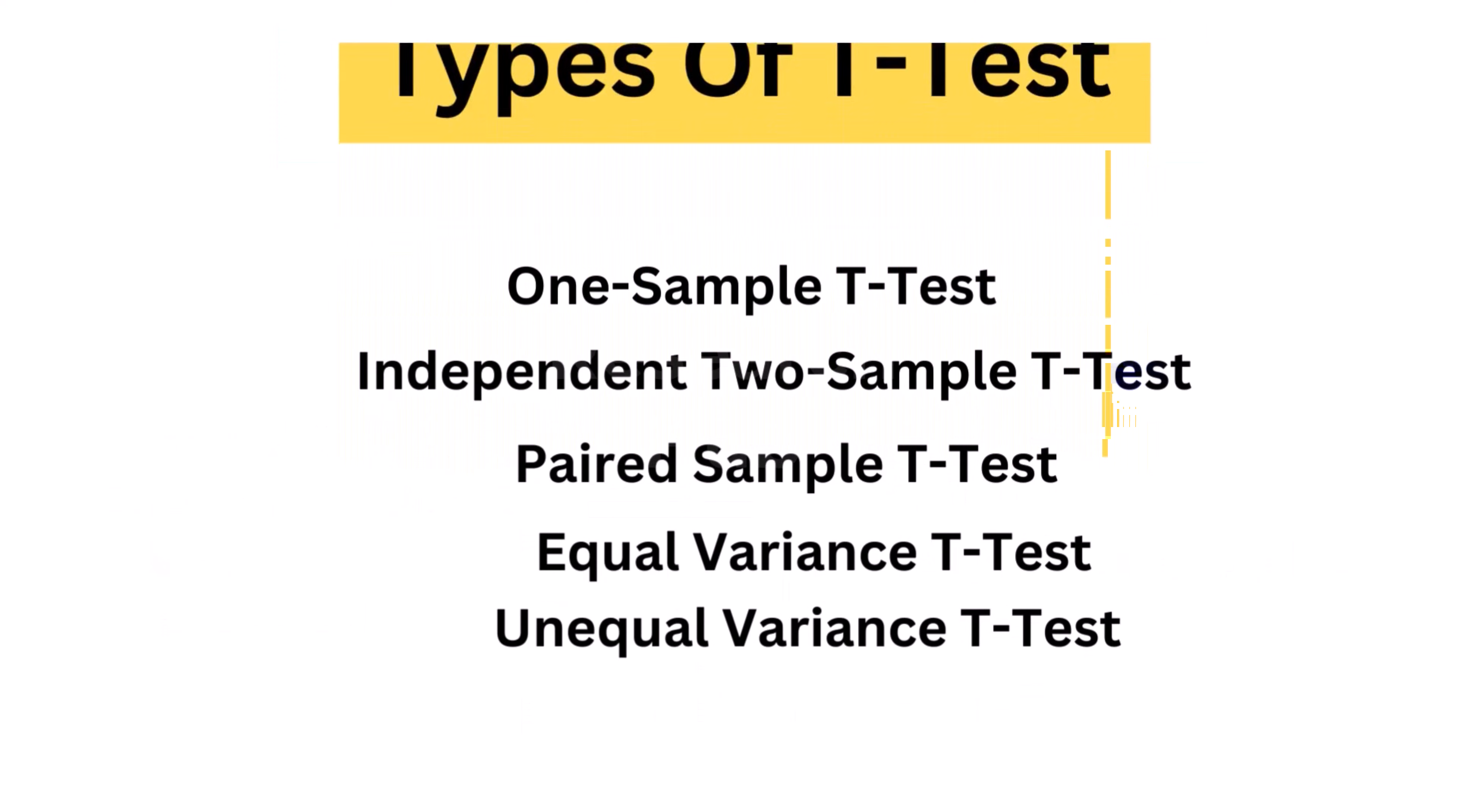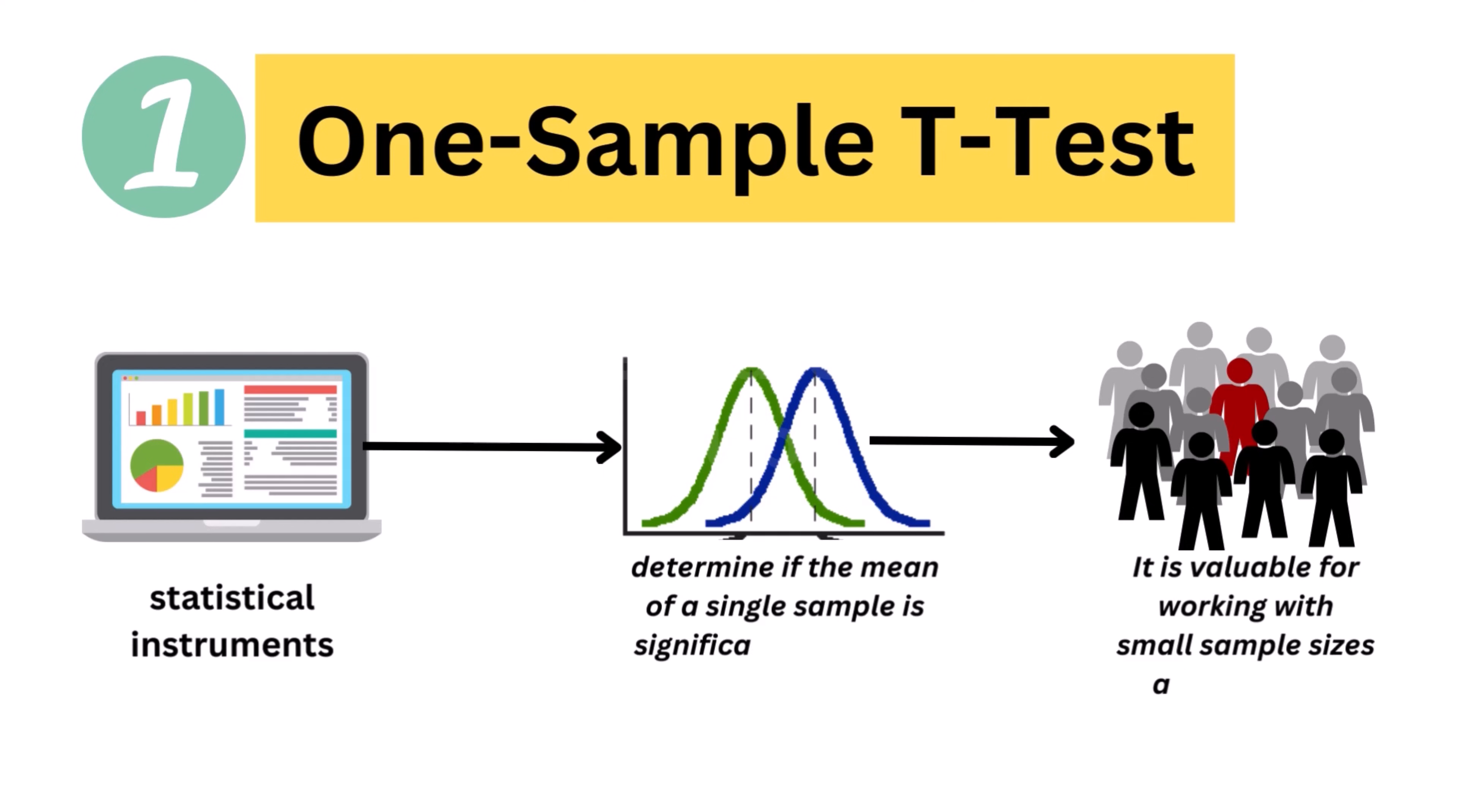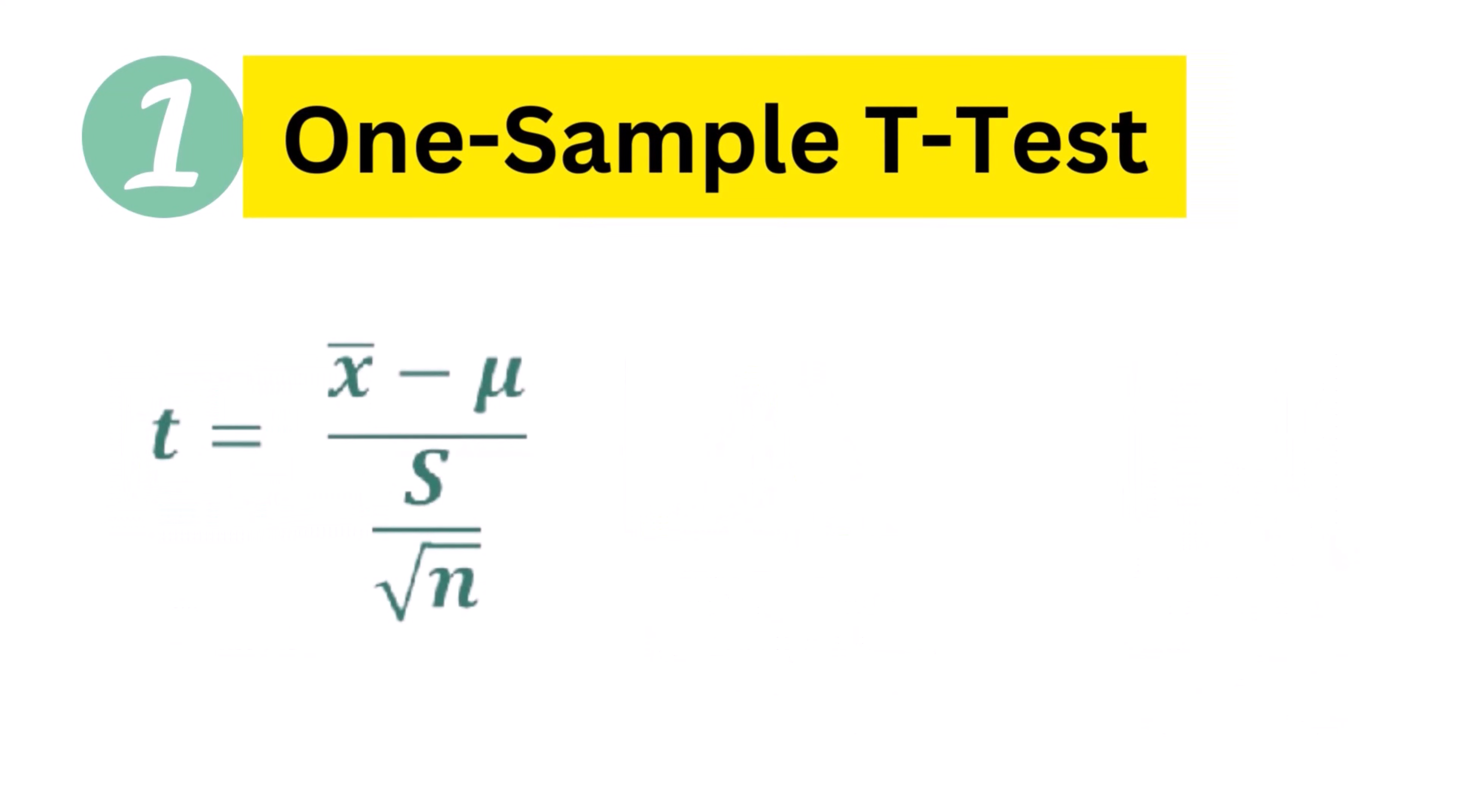Types of t-test. 1. One-sample t-test. The one-sample t-test is a statistical method that helps determine if the mean of a single sample is significantly different from a known or supposed population mean. It is valuable for working with small sample sizes and normally distributed data. The test allows researchers and analysts to draw meaningful conclusions from limited data.